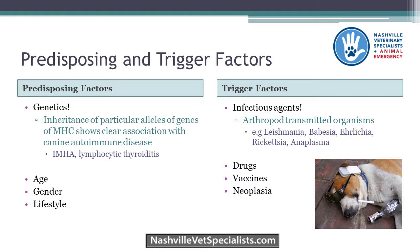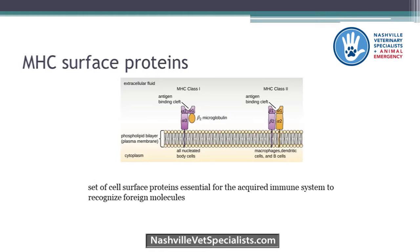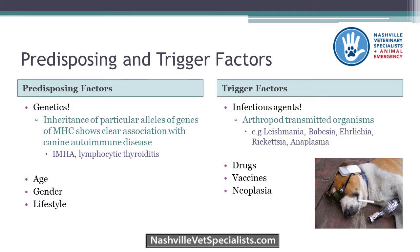Genetics is a big predisposing factor. We know that inheritance of particular alleles of the MHC gene makes an animal at a much higher risk for immune-mediated disease. The MHC gene makes a set of cell surface proteins required for the acquired immune system to recognize foreign molecules. MHC class 1 and class 2 are required for that mis-presentation of an autoantigen. This has been proven for IMHA and lymphocytic thyroiditis — specifically Cocker Spaniels for the IMHA gene mutation. Other predisposing factors include age, gender, and poor lifestyle choices.